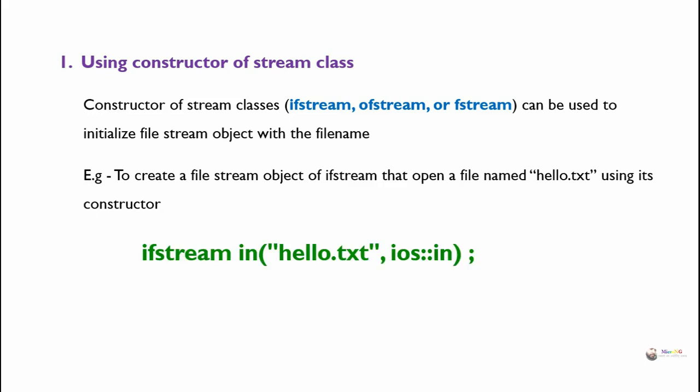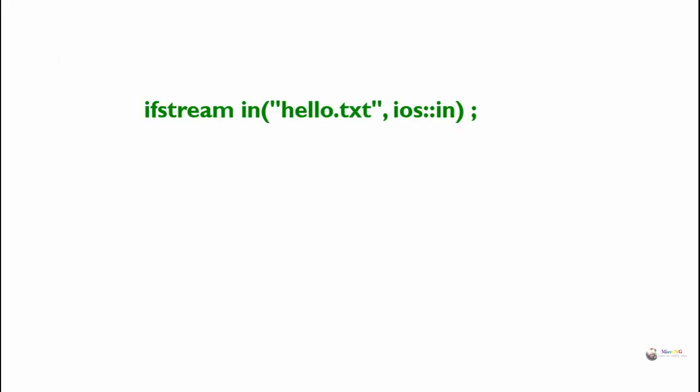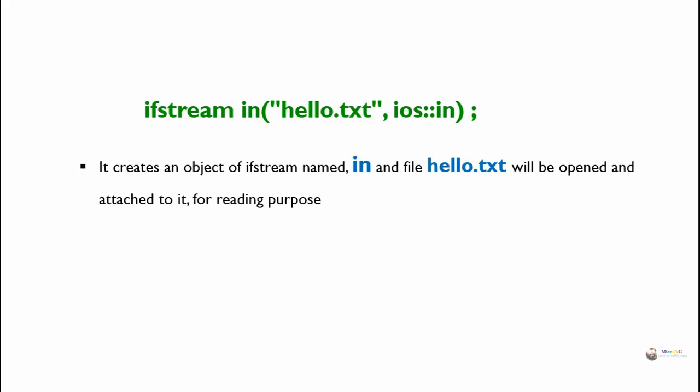ifstream followed by 'in' is the object name. In this case, 'in' is the object — it creates an object of ifstream named 'in', and the file hello.txt will be opened and attached to it for reading purpose.